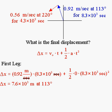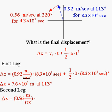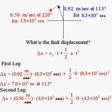That's the explorer's displacement at the end of the first leg. But she turns and goes at another direction — 220 degrees — with a speed of 0.56 meters per second. We apply equation 2.19 to the second leg: V₀ is 0.56 m/s at 220 degrees, multiplied by 4.3 times 10 to the 3rd seconds, with no acceleration. The resulting displacement of the second leg is 2.4 times 10 to the 3rd meters at 220 degrees.